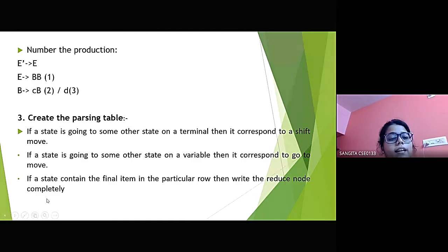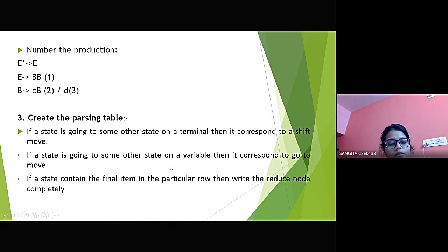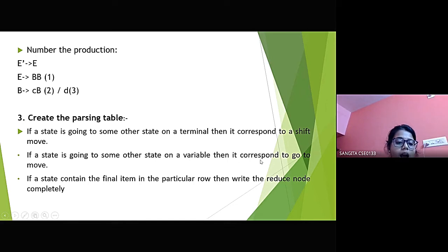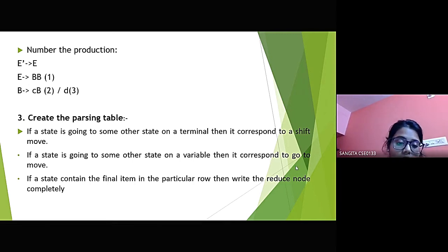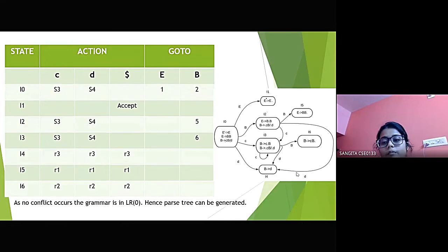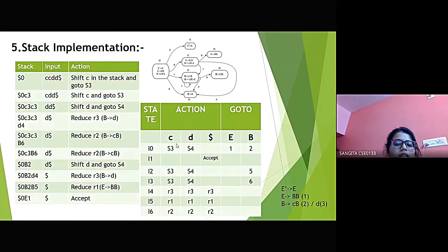We number the productions to create the parsing table. The rules for constructing the parsing table are: if a state transitions to another state on a terminal, it corresponds to a shift move; if a state transitions on a variable, it corresponds to a goto move; and if a state contains the final item, write the reduction node in that row. The input is CCDD as mentioned earlier.